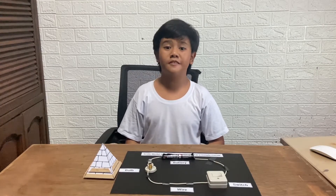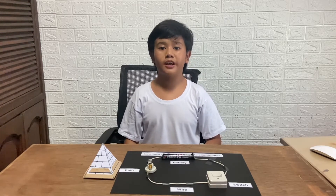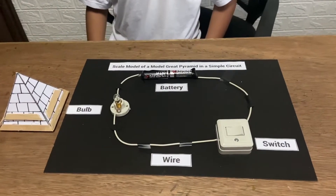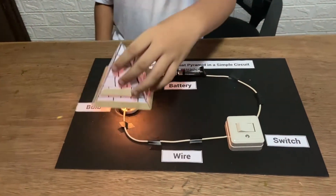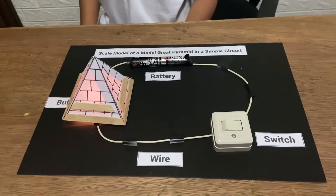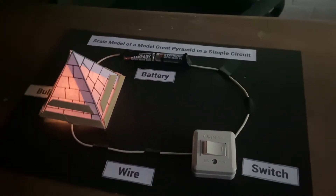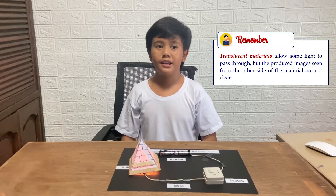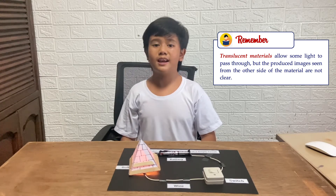I am now done with this activity! Here is a scale model of the Great Pyramid in a simple electric circuit. Do you see the light shining through our pyramid? This pyramid is an example of a translucent object. It allows light to pass through, but the images seen from the other side of the material are not clear.